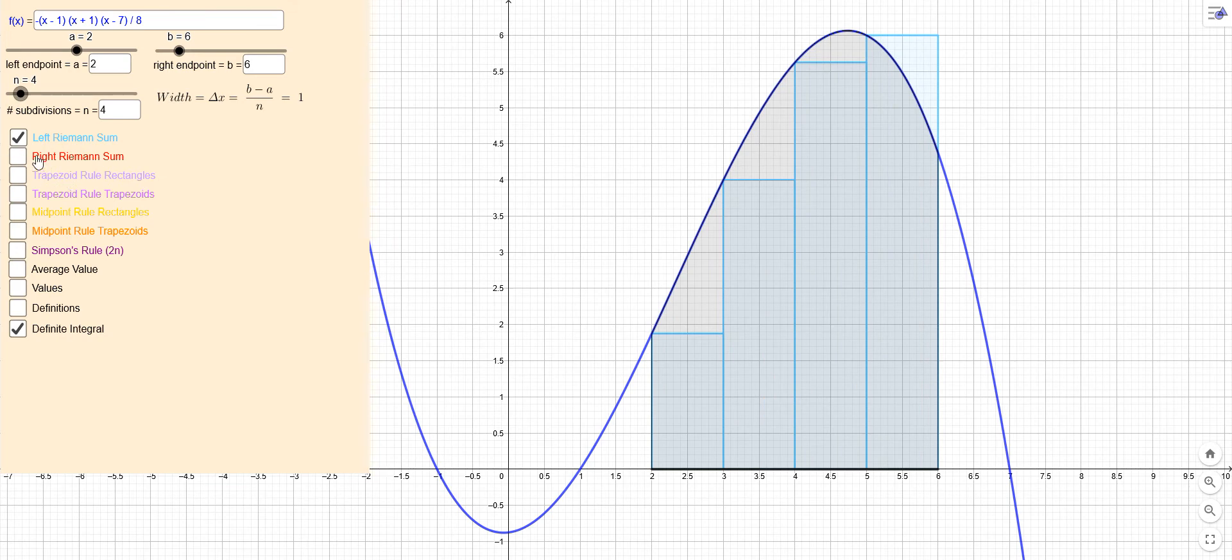Now there's no reason why we should necessarily go to the left end of the rectangle for the heights of the rectangles. We could go to the right end. That would be a right Riemann sum that looks like this.